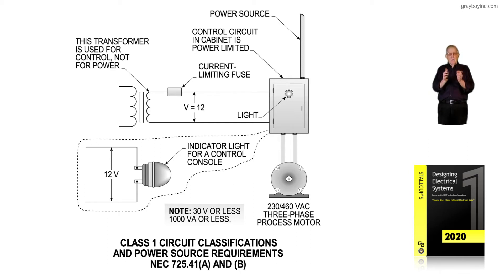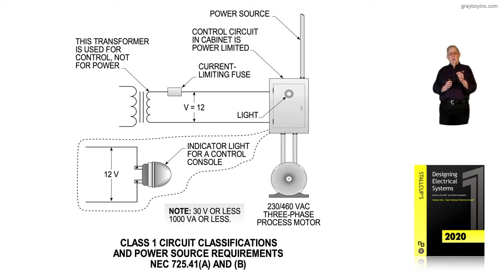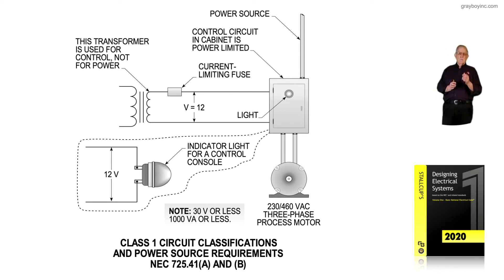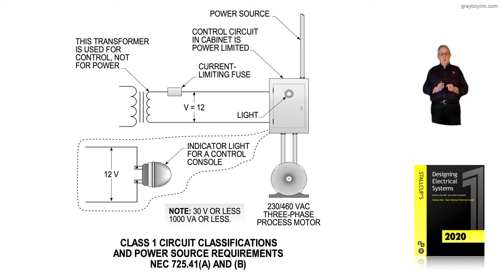If we had 240-volt three-phase feeding a contactor, we could take 240-volt control, or we could have 120-volt control. If you had 480-volt control, you could even take 480-volt control stop and start stations, giving you 277 volts to ground.